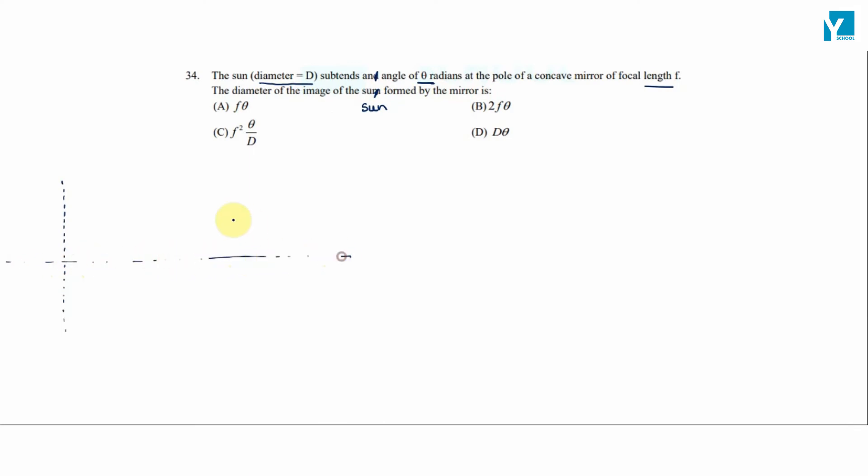The diameter of the sun subtends an angle of theta degrees at the pole of a concave mirror. Here we have a concave mirror.